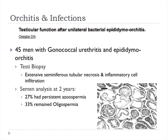With infections and orchitis, inflammatory cells can also cause bilateral problems with spermatogenesis even if the process is unilateral. In a study of 45 men with gonococcal urethritis or epididymal orchitis, testicular biopsy showed that seminiferous tubules became necrotic with a large inflammatory cell infiltrate. Semen analysis at two years out found 27% still had azoospermia, 33% had retained oligospermia, and the remaining 40% had normal semen analysis.